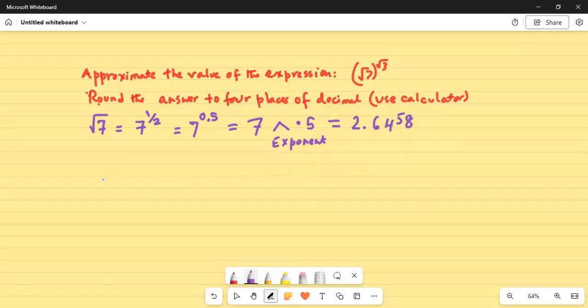And square root of 3 similarly is 3 exponent half or 3 raised to the power of 0.5 which in my calculator is 3 exponent 0.5 equal to 1.7321.